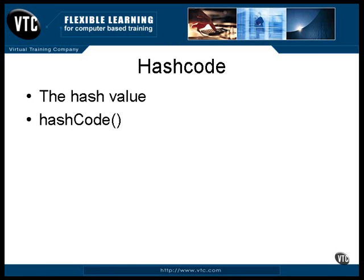The Java Object class has a method named hashCode that returns a hash value for that object. Therefore, every object in Java has a hash value, even though the value is not guaranteed to be unique. It's common for a class to override the default hashCode method and use the data inside the extended object as the basis of the hashing algorithm.